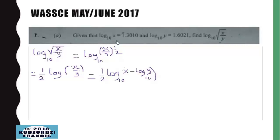Given that log base 10 of x is equal to 1.3010 and log base 10 of y is equal to 1.6021, find log base 10 of the square root of x over y. We know that the square root of x over y can be rewritten using an exponent.